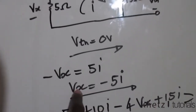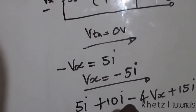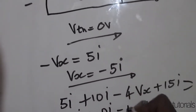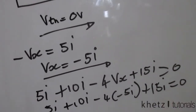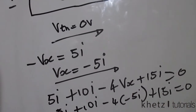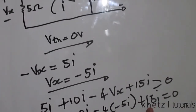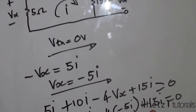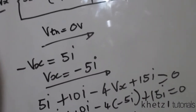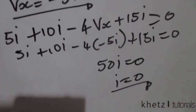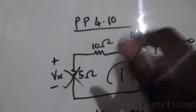Now substituting our vx: 5i plus 10i, negative 4 multiplied by negative 5i, plus 15i equals 0. Adding these up we get 5i + 10i + 20i + 15i, which gives 50i equals 0, meaning i equals 0.